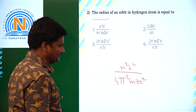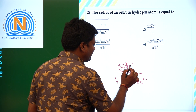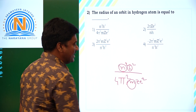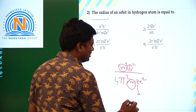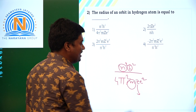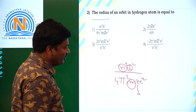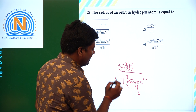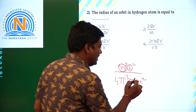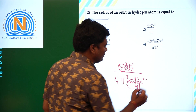In this formula, n is called as principal quantum number, h is called as Planck's constant, m is called as mass of the electron, z is called as atomic number for the specific element — here hydrogen atom — and e is the charge of the electron. What is changing here? Principal quantum number n is changing and atomic number z is changing for different elements. The remaining values are constants.